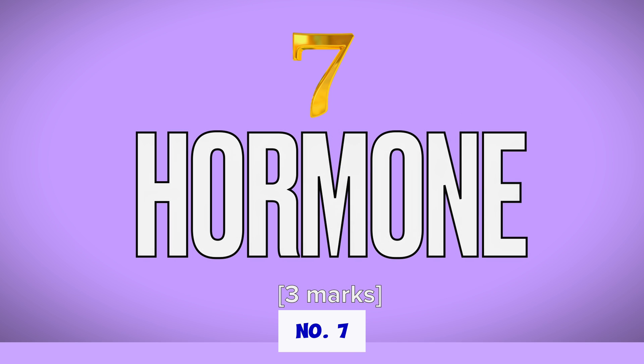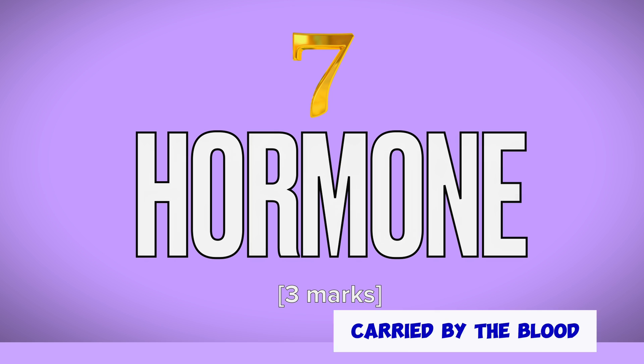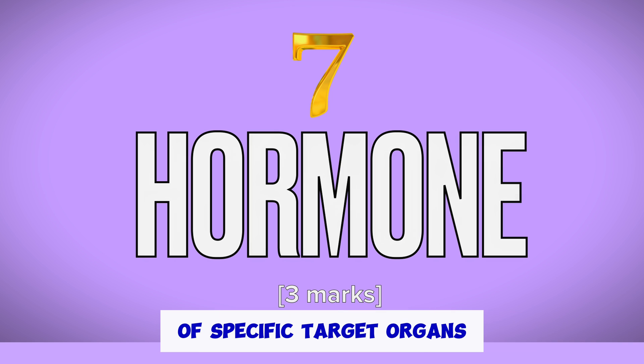Number 7: A hormone is a chemical secreted by endocrine glands, carried by the blood, and alters the activity of specific target organs.